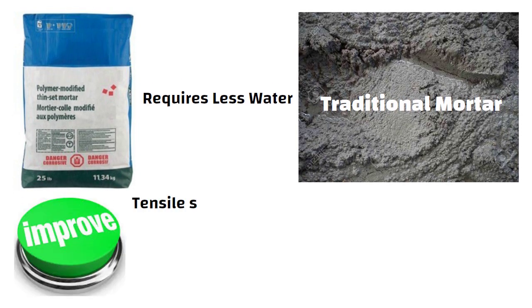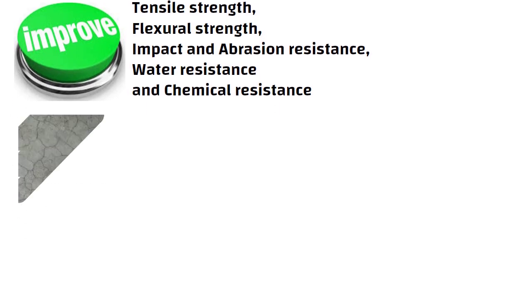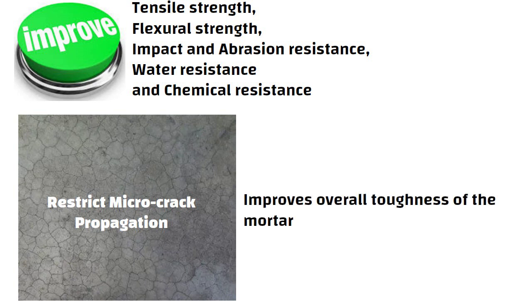Polymers improve tensile strength, flexural strength, impact and abrasion resistance, water resistance and chemical resistance of polymer-modified mortar in comparison to mortars without polymers. Added to that, polymers restrict the micro-crack propagation which improves the overall toughness of the mortar.